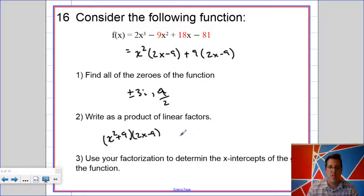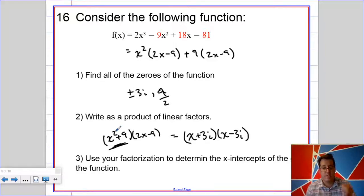Now, as a product of linear factors, I would have to turn that into x plus 3i times x minus 3i. Remember, you're thinking about this as a difference of squares. It's just since it's positive 9, you know, a sum of squares, then you need to involve the i.